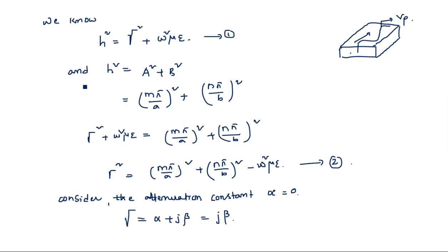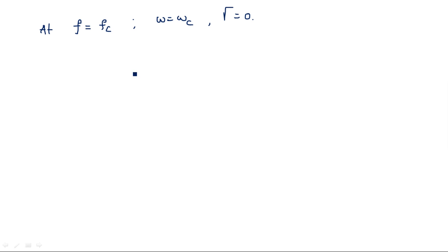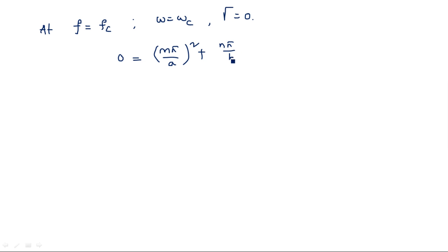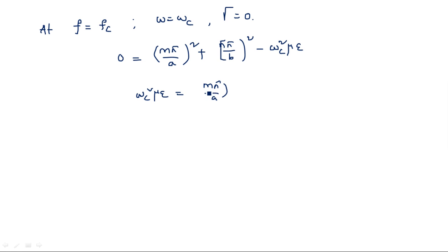At cutoff frequency fc, the propagation constant γ = 0. Substituting γ = 0 into equation 2: 0 = (mπ/a)² + (nπ/b)² − ωc²με. Therefore ωc²με = (mπ/a)² + (nπ/b)².